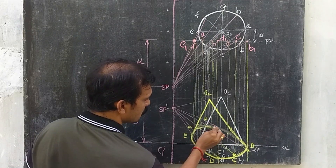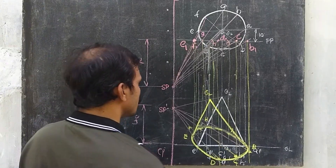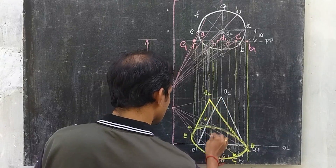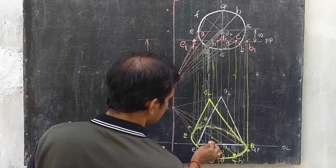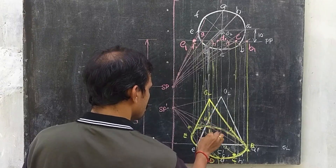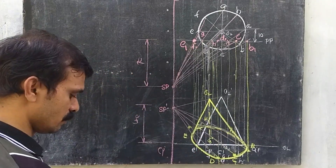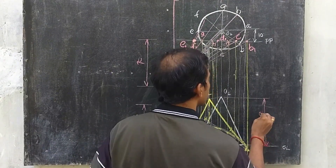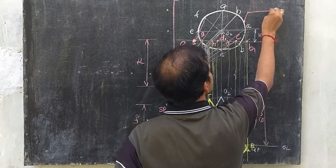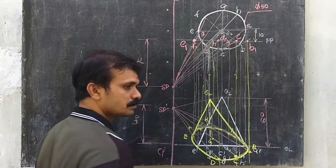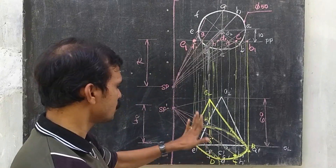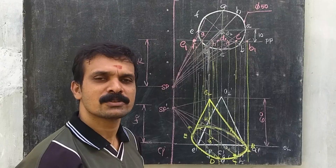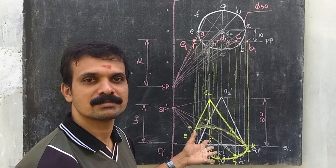Let us take the axis here — this will be the axis of the curve. The height of the cone is 60 mm as given, and the diameter is 50 mm. So this is the perspective view of the given cone. I hope all of you have understood. Thank you.